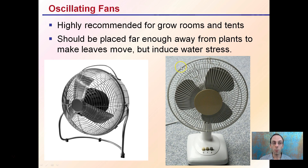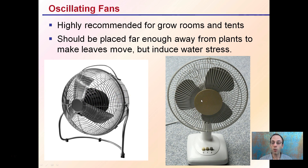Oscillating fans are highly recommended for grow rooms and tents. They should be placed far enough away from plants to make the leaves move, but not induce water stress. You don't want them blowing directly on the plants, causing potential leaf burn or water stress — just a nice, gentle airflow. There are two types: some oscillate internally within the cage, while others have a motor that rotates the entire unit. This helps prevent any one plant from getting all the directed wind and spreads airflow over the grow area.